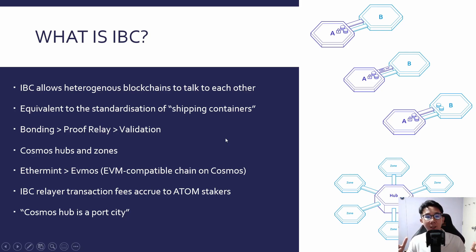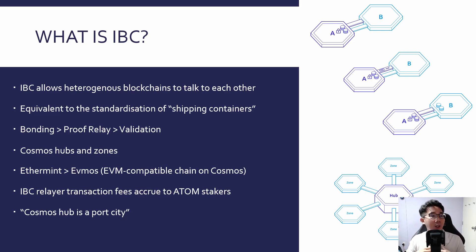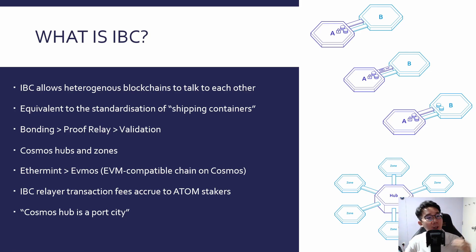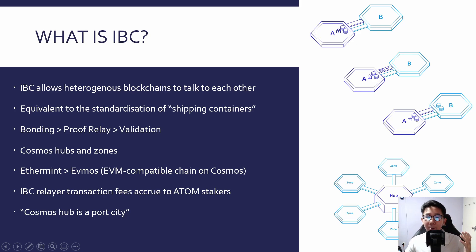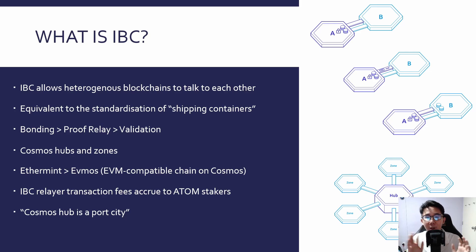There is one problem: if this grows to hundreds and thousands of blockchains, it would not make sense to have each blockchain creating channels between one another — very inefficient, because as the number of blockchains grows, so do the shipping channels. One way to solve it is through a concept called Hub and Zone. It's simple: having a hub at the center with different zones — different blockchains — connecting to it. This hub is a central point allowing IBC token transfers between all these different zones and blockchains, as long as they are connected. The main hub right now is called the Cosmos Hub, which is its own blockchain facilitating IBC transfers between different blockchains.